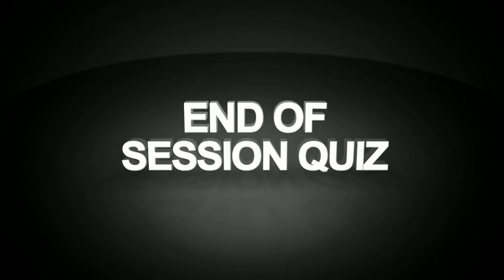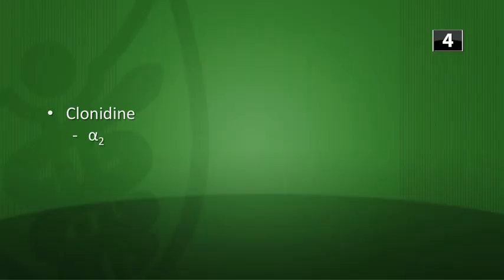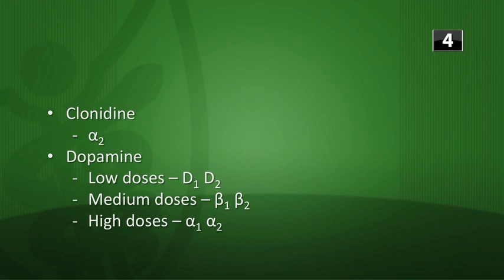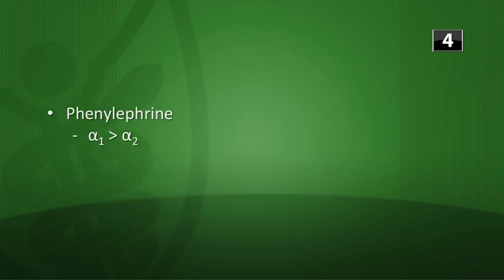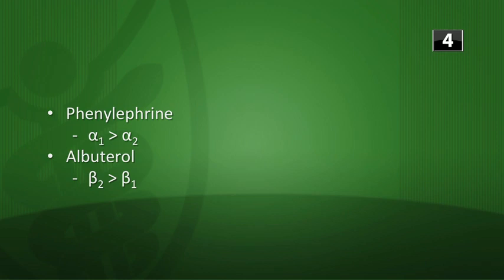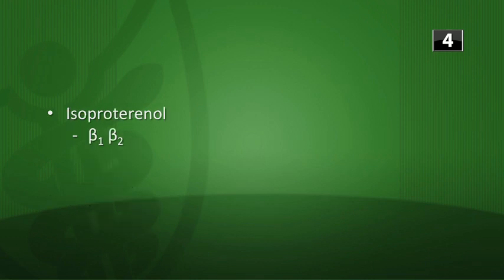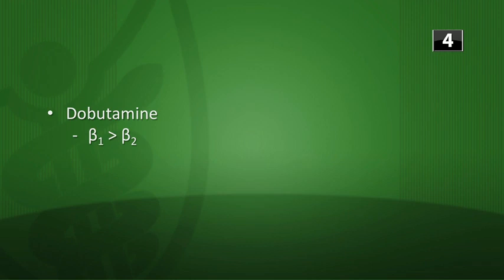That brings us to the end of the lecture. Time for the end-of-session quiz. Which receptors are stimulated by the following sympathomimetics? Clonidine → alpha-2. Dopamine → D1/D2 at low doses, beta-1/beta-2 at medium doses, alpha-1/alpha-2 at high doses. Phenylephrine → alpha-1 primarily. Albuterol → beta-2 with a little beta-1. Norepinephrine → alpha-1, alpha-2, beta-1 (but no beta-2, unlike epinephrine). Isoproterenol → beta-1, beta-2. Epinephrine → alpha-1, alpha-2, beta-1, beta-2. Dobutamine → beta-1 primarily, maybe a little beta-2. Terbutaline → lots of beta-2 and a little beta-1.